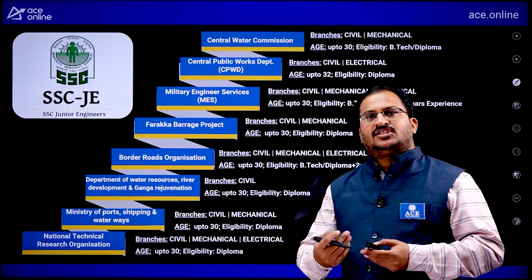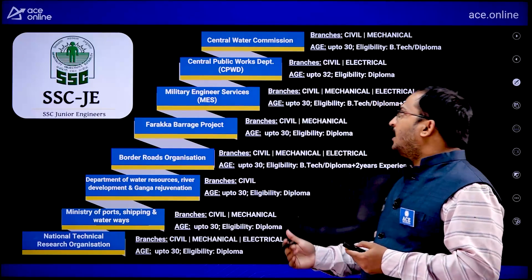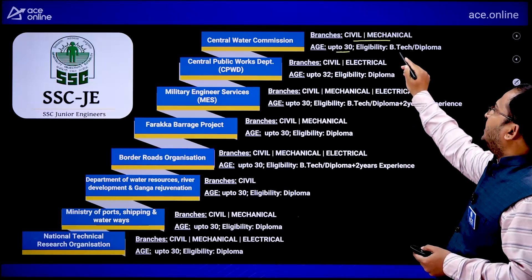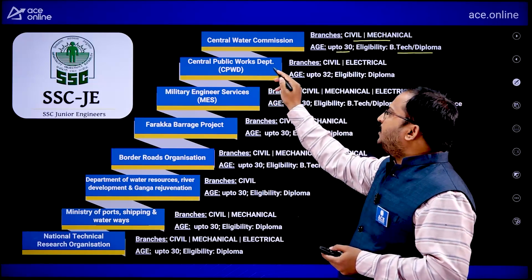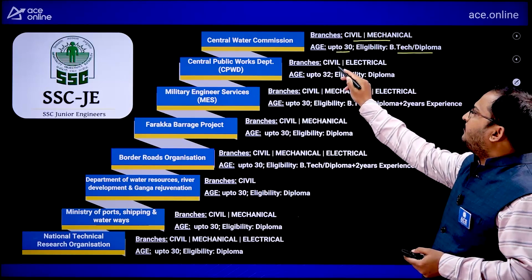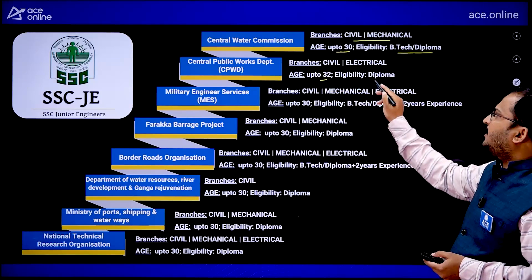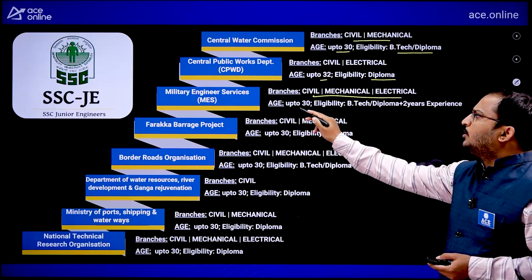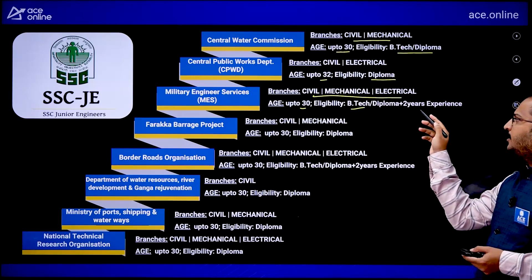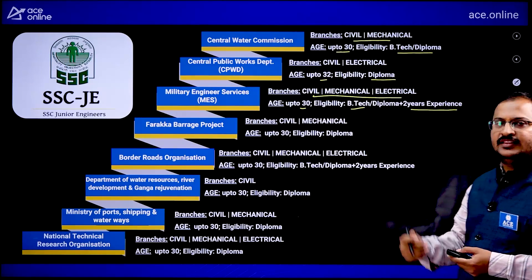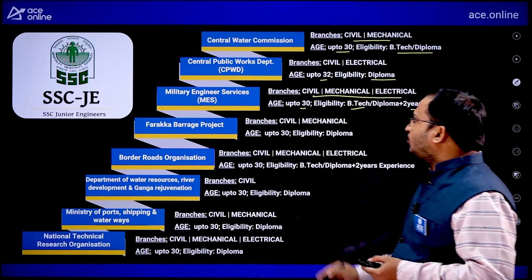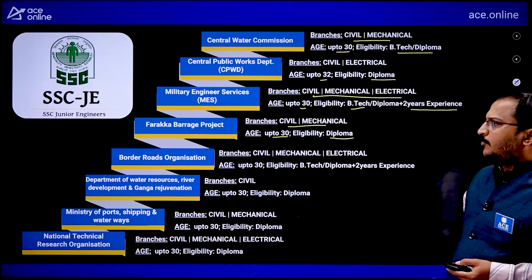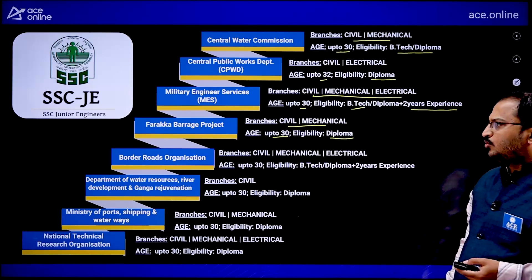The departments with available vacancies are: Central Water Commission for Civil and Mechanical Engineering students, age up to 30 years, eligibility B.Tech or Diploma; Central Public Works Department (CPWD) for Civil and Electrical Engineering students, age up to 32 years, eligibility Diploma; Military Engineering Services for Civil, Mechanical, and Electrical, age up to 30, eligibility B.Tech or Diploma plus two years of experience; and Farakka Barrage Project for Civil and Mechanical students, age up to 30 years, eligibility Diploma.